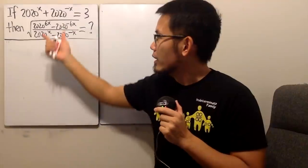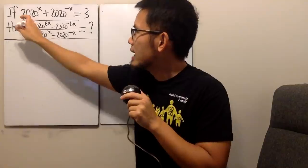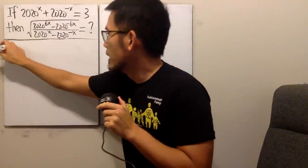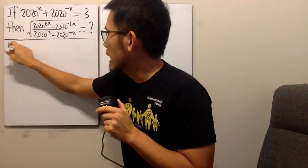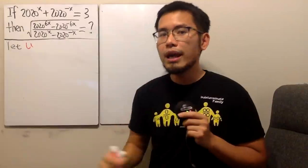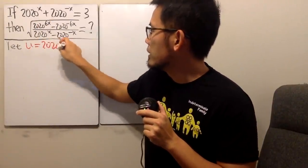Instead, this right here can actually be factored and we are going to do that. But I do not want to write down 2020 to the x power so many times. So let's do the following. I'm just going to do a substitution. I will select a variable, let's say u because I like u, and I will be calling this 2020 to the x power.